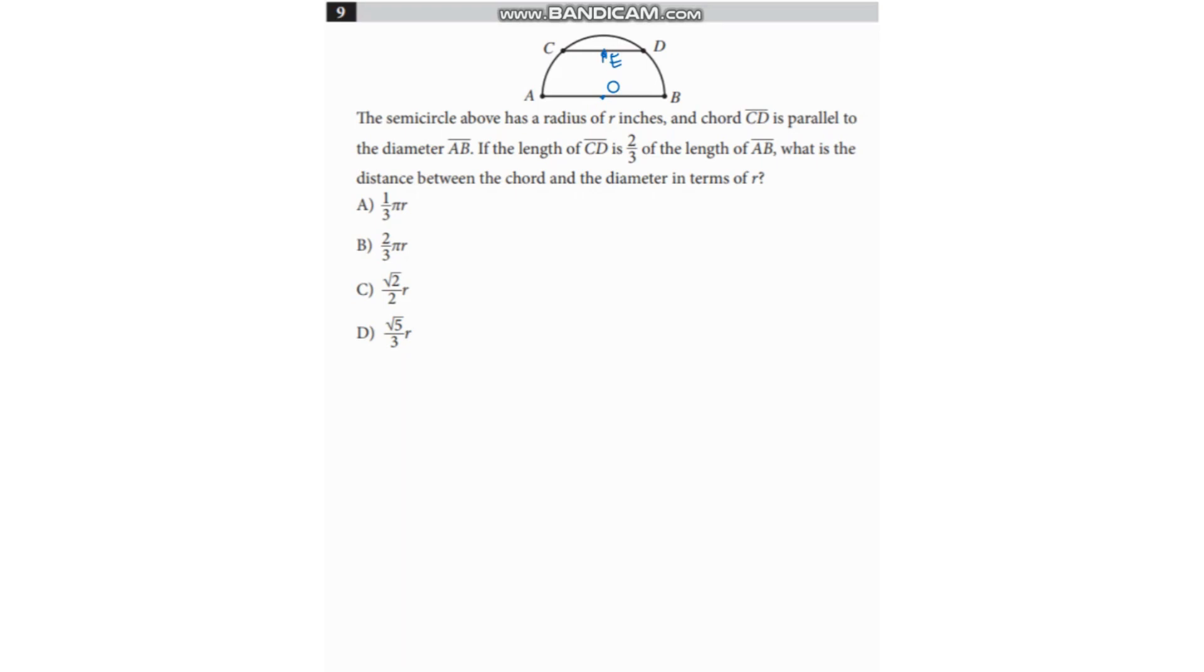And we draw a line here. We are actually looking for this distance EO. And it is given that CD is equal to two-thirds of AB.